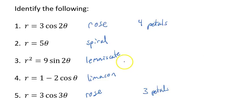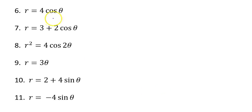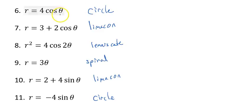Let's try a few more — it's important that you get these right. Here are problems six through eleven. Identify which type each equation is, and if it's a rose, give how many petals. Go ahead and pause.